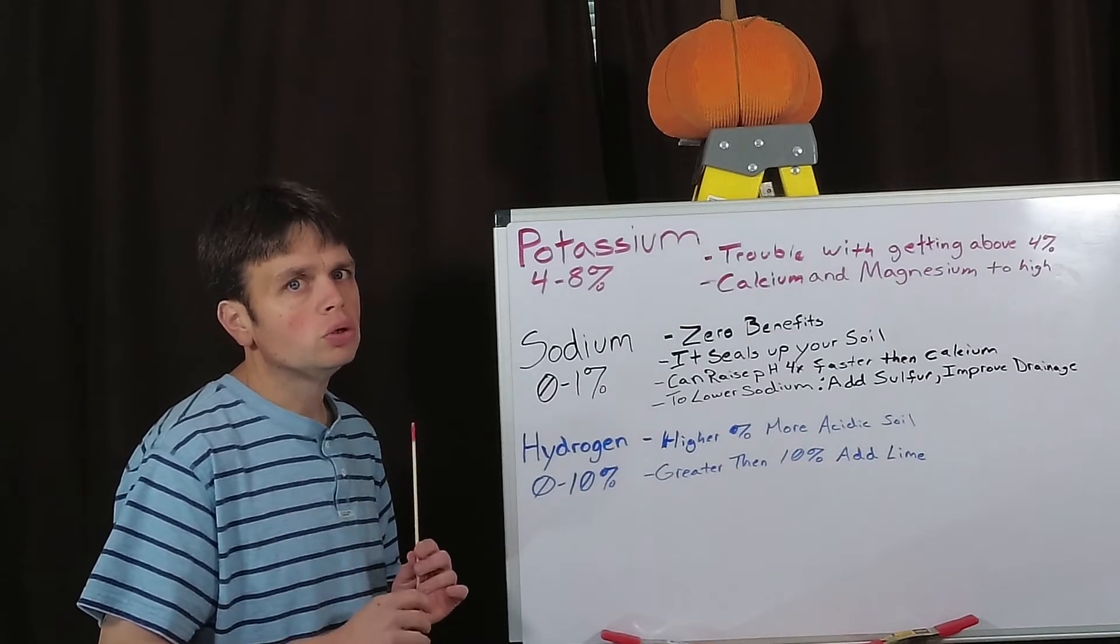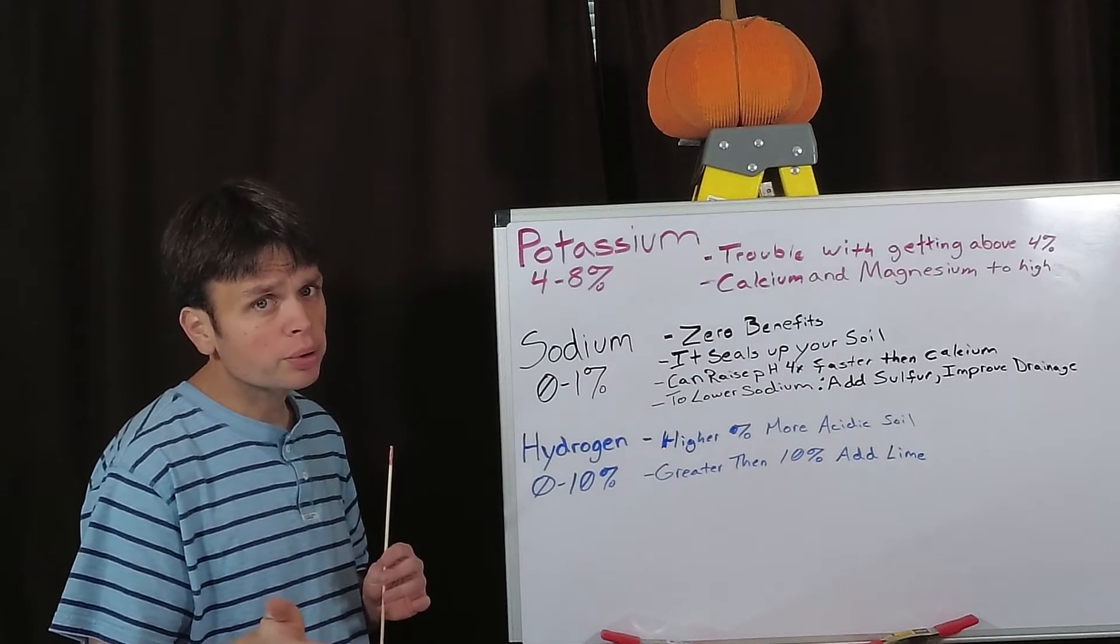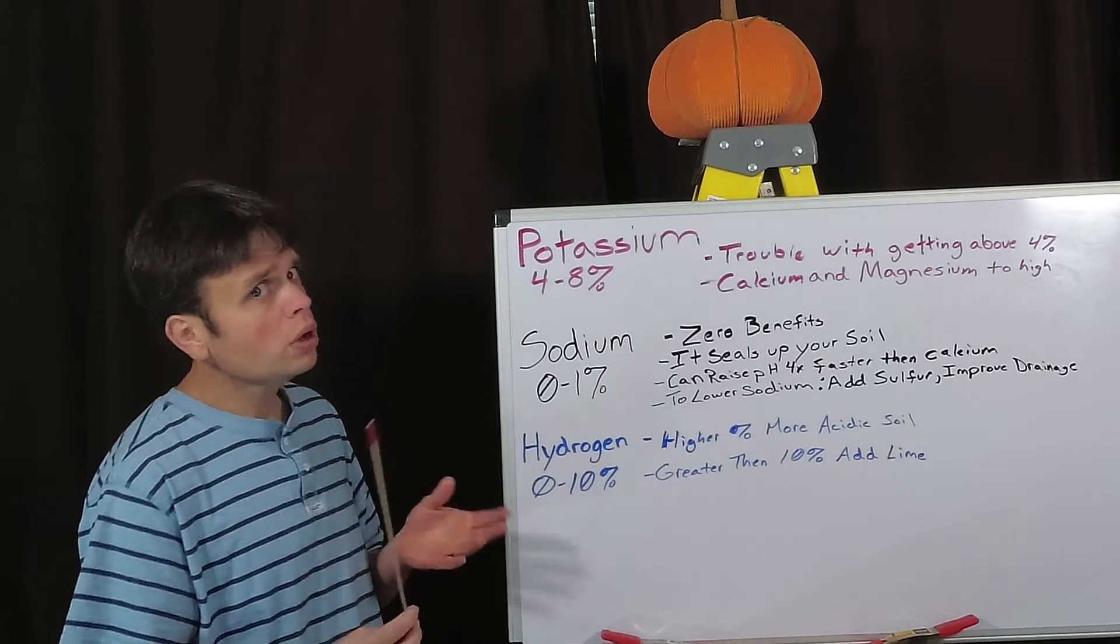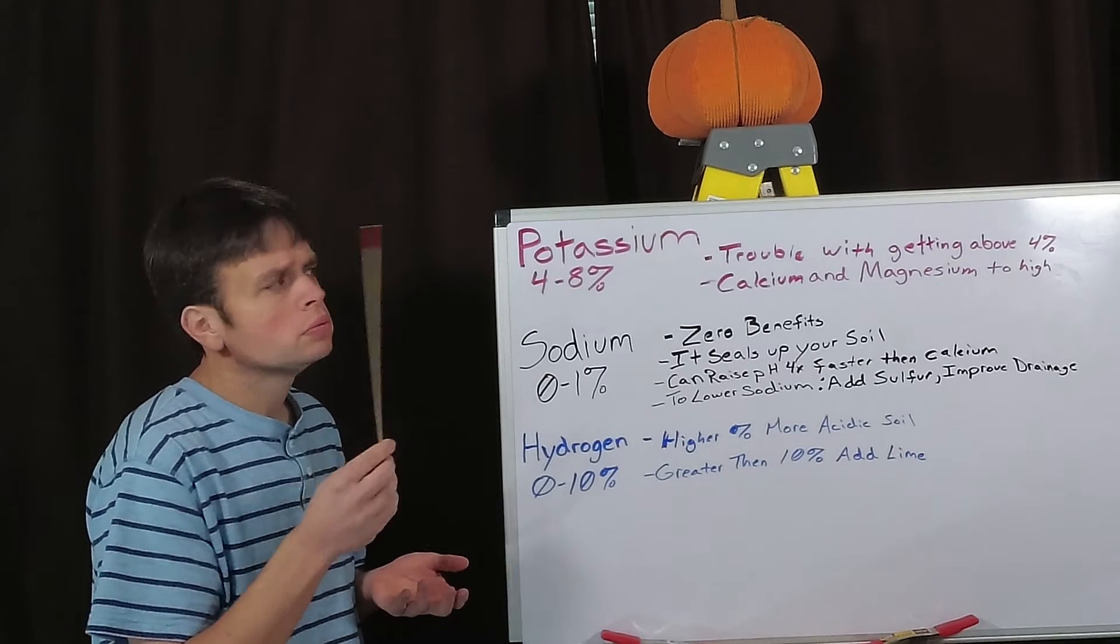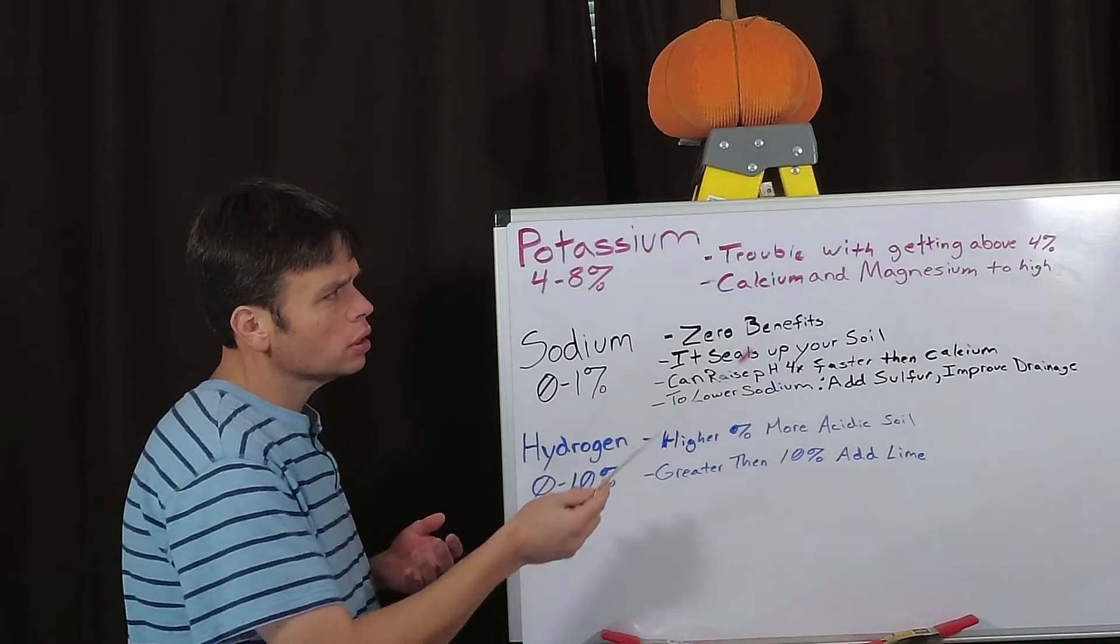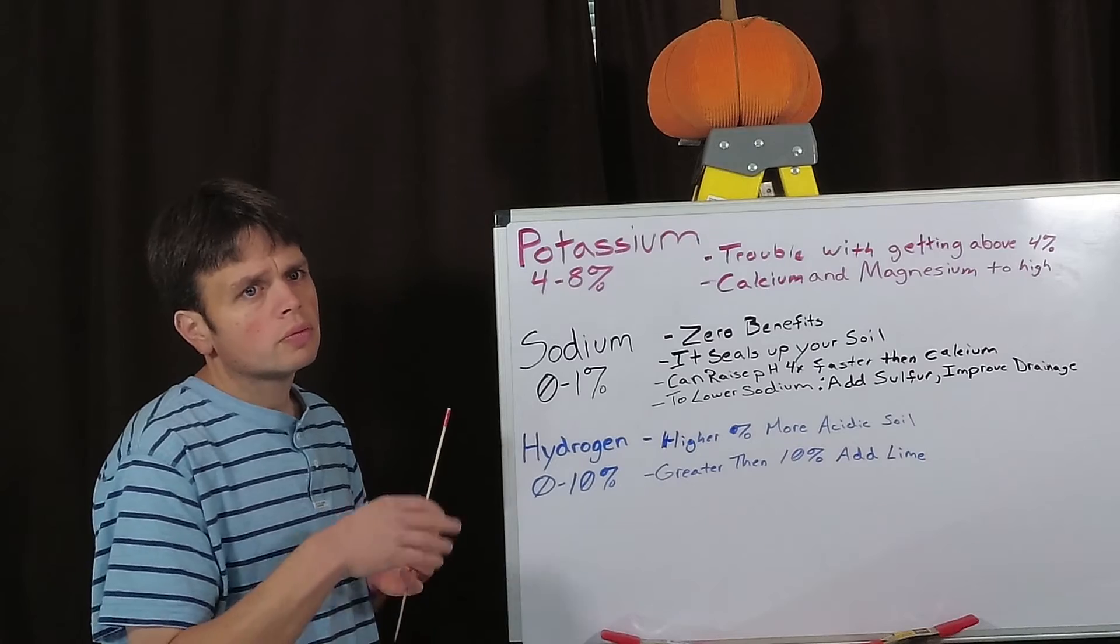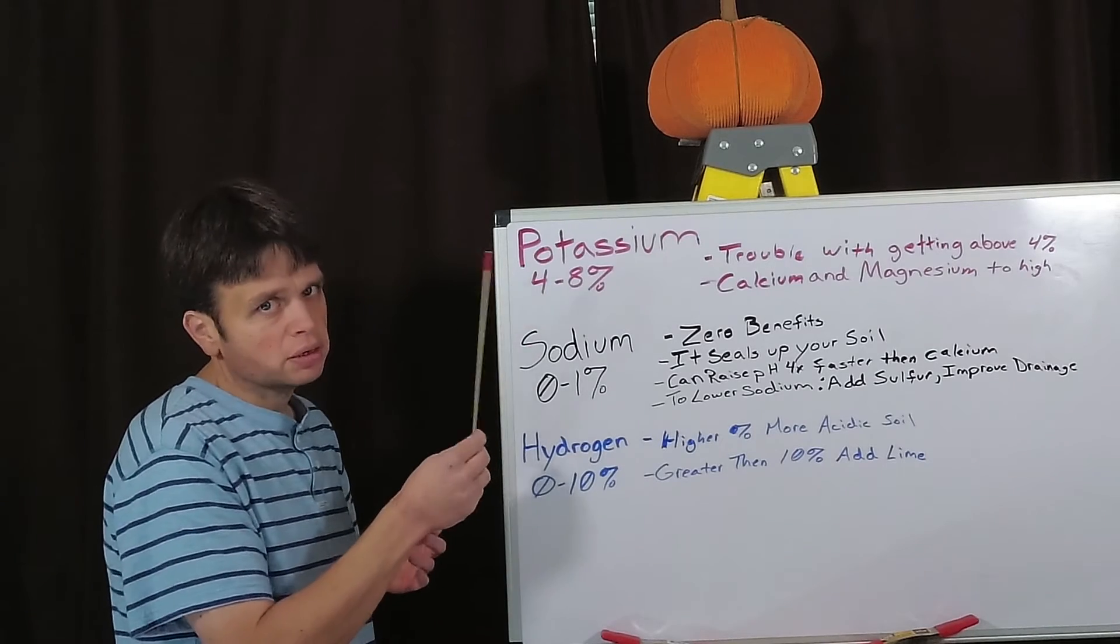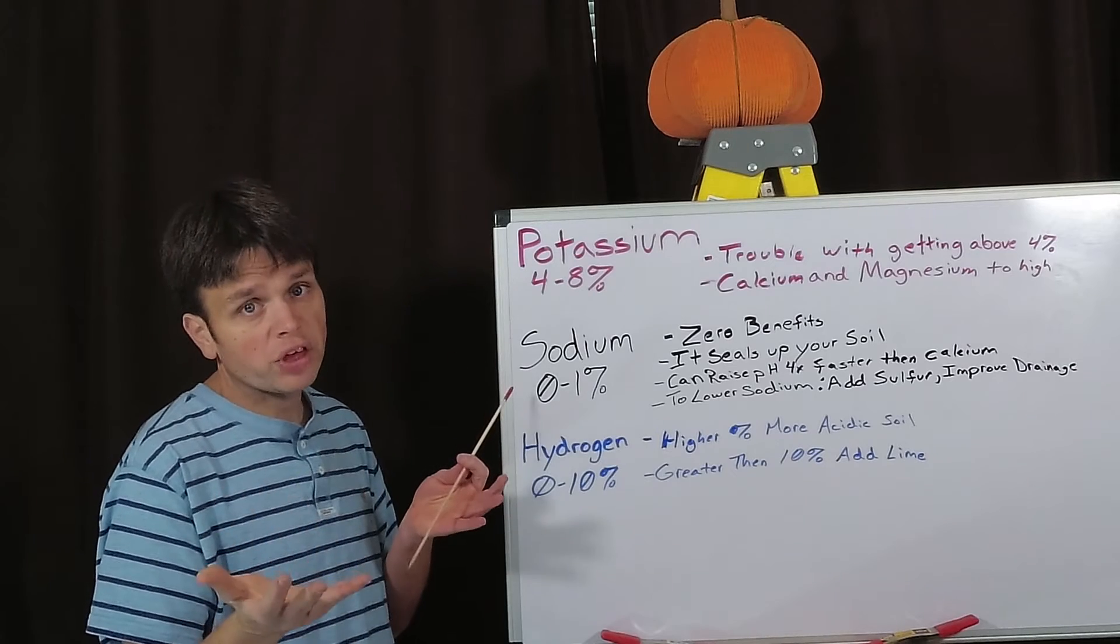So we need to fix that problem and the way we fix that problem is one, kind of obvious, add more potassium. The other solution to that is also to lower your calcium magnesium numbers, so that we can get back at least to four percent so your plant can take that up.